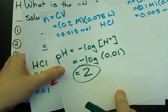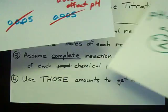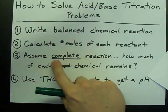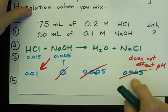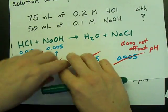Good work, everyone. But again, this is how you do it. Balanced chemical reaction. Check. Number of moles of each reactant. Check. Assume complete reaction and figure out how much of these remain and how much of these are produced. Check. Use that information to get your pH.